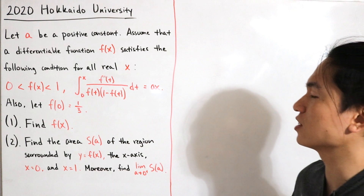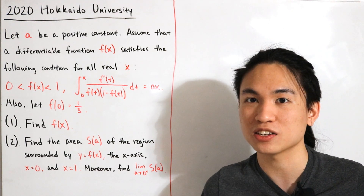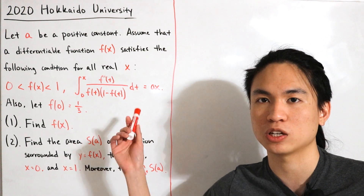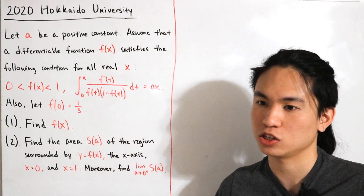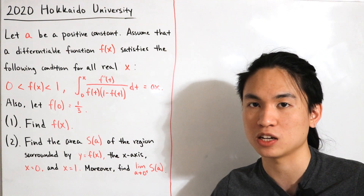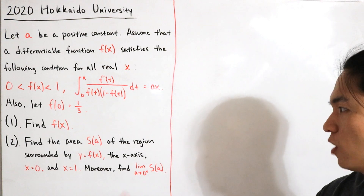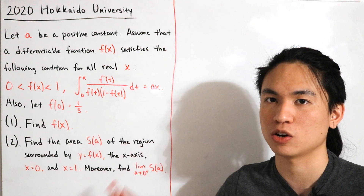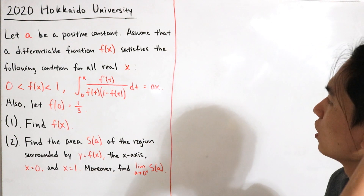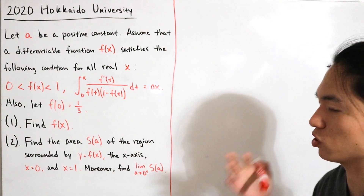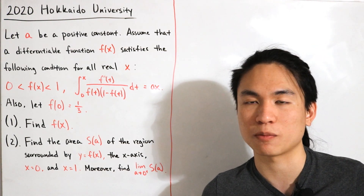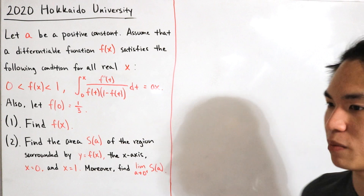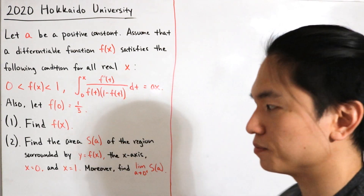Personally, I think this is actually an easier question in terms of analysis. If we're trying to find f(x), it's pretty straightforward: we start with the given integral condition, rewrite some things, integrate, and find what we want. The follow-up question in part two builds on those results. Let me know if there are other college entrance exam questions you'd like me to solve. Anyway, let's jump right in.